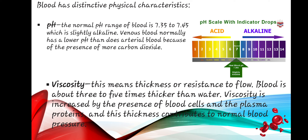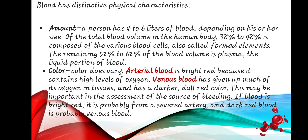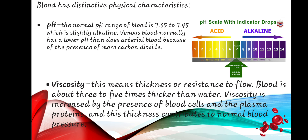In summary, there are four distinctive physical characteristics of blood. We can characterize blood by its amount, color, potential hydrogen (pH), and viscosity. Please be reminded of these four physical characteristics of blood.